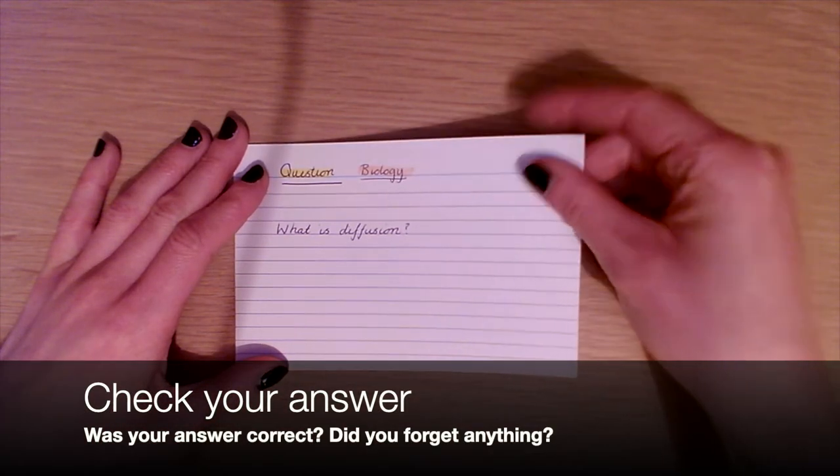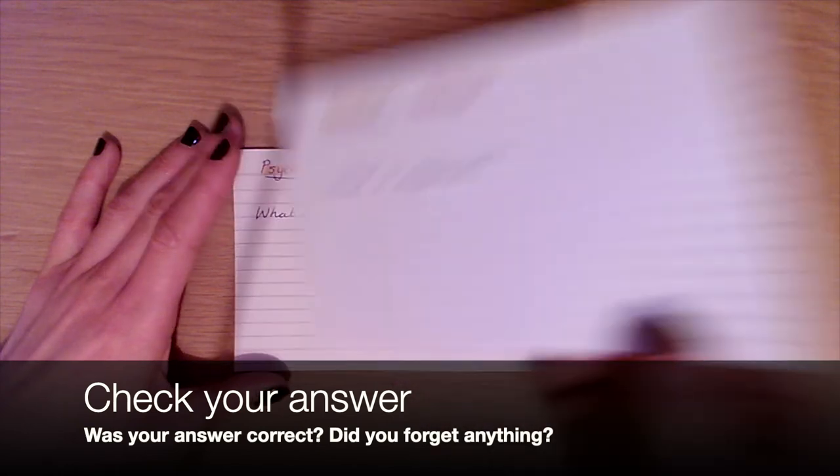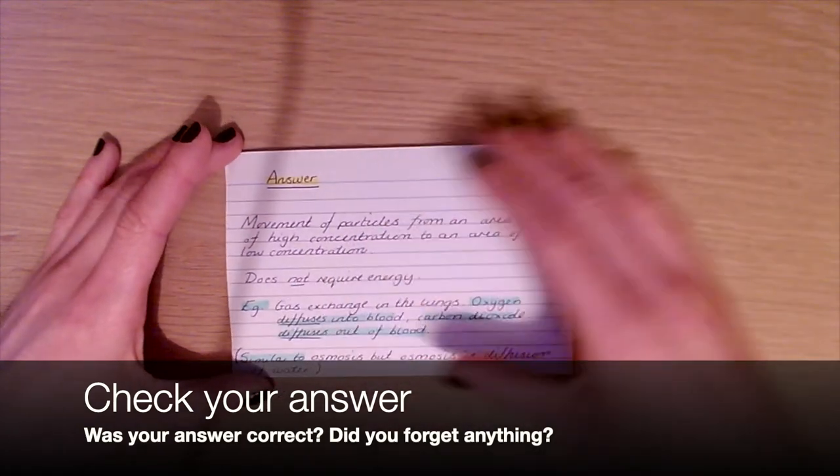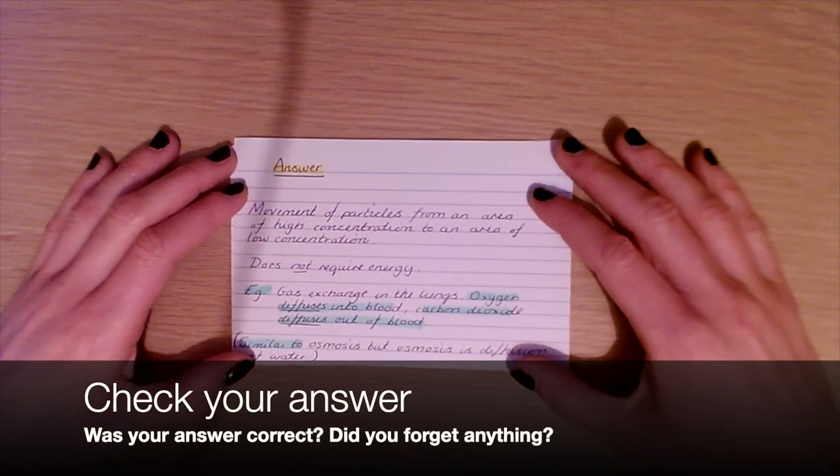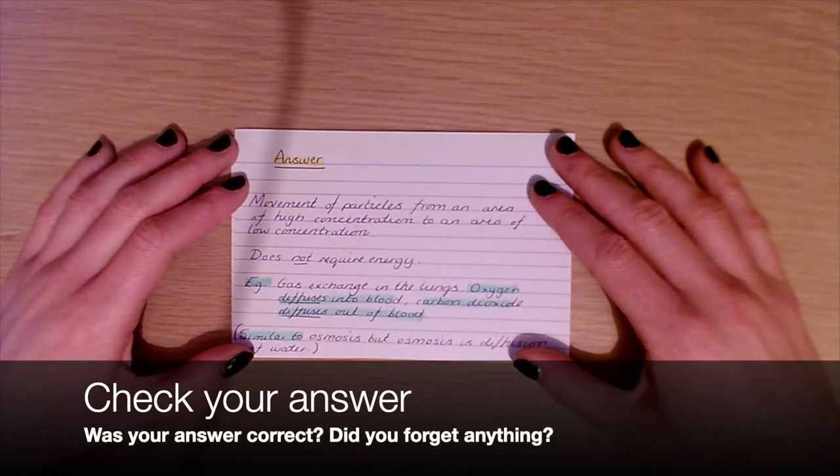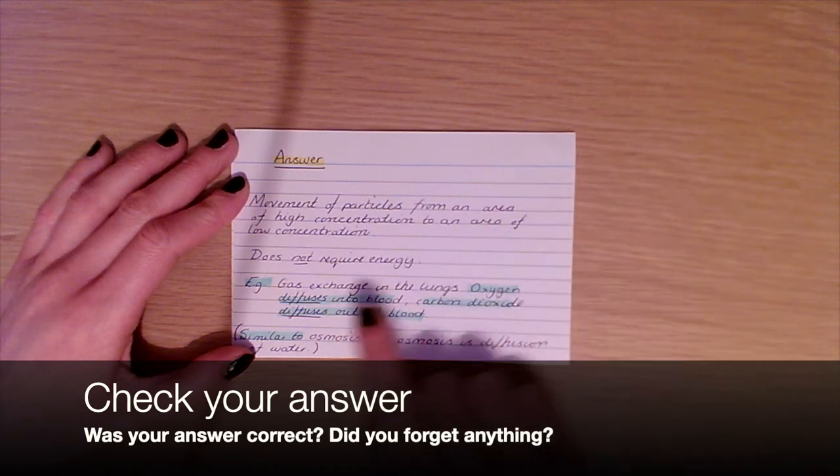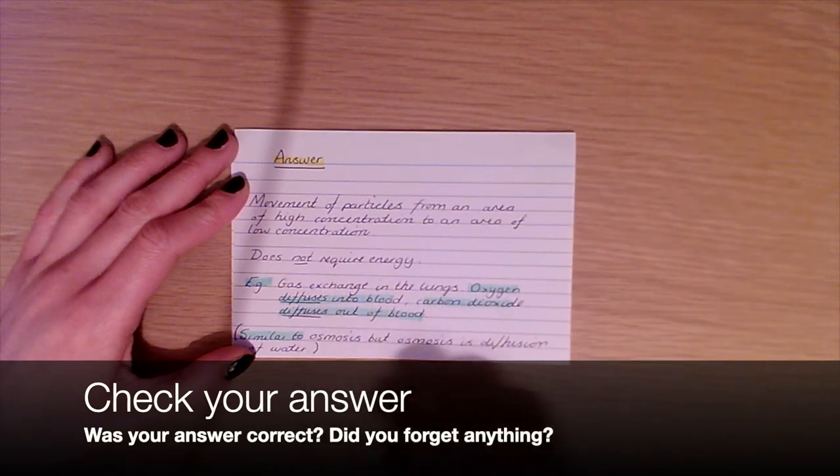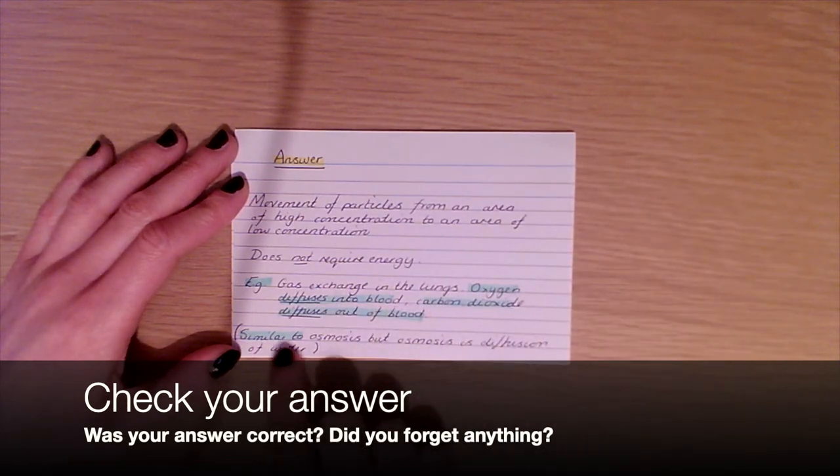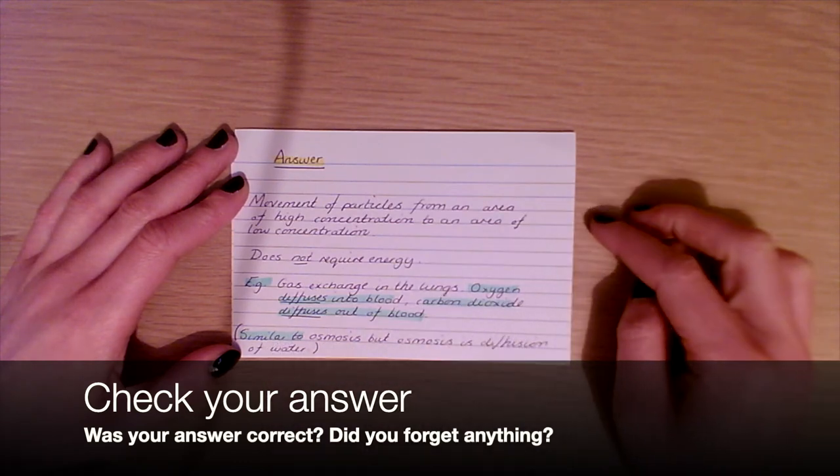When you've generated an answer, turn the flashcard over to check whether your answer was complete and correct. You can see in this example that we've got both a definition of diffusion but also some examples of where diffusion takes place and beginning to consider how it's similar to other transport processes.